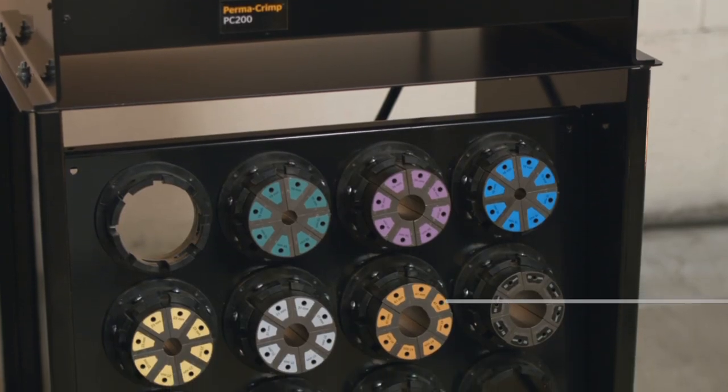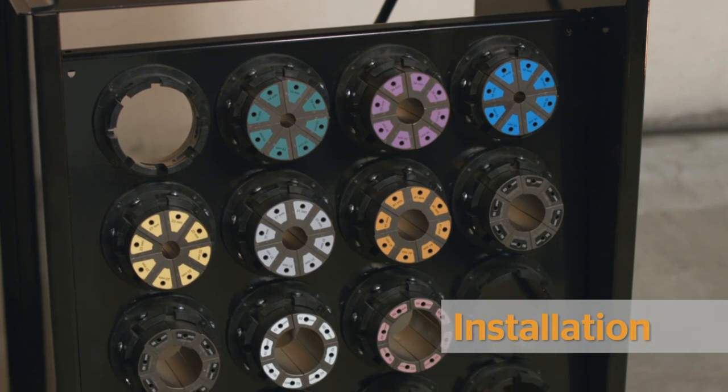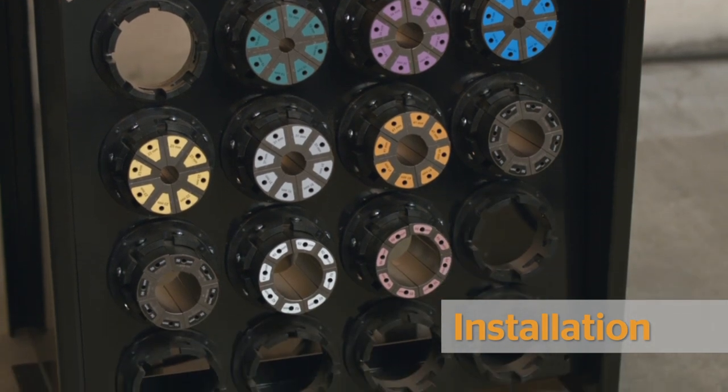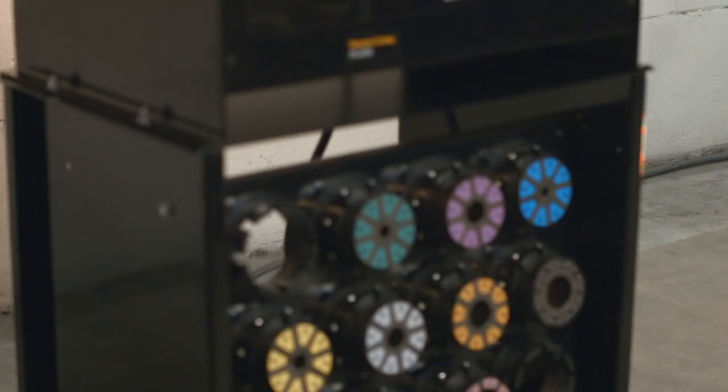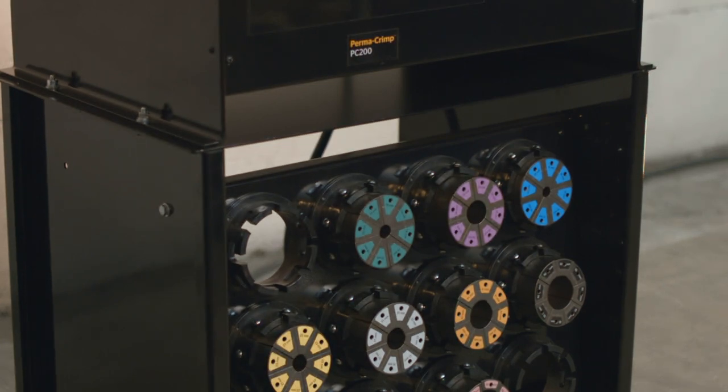The Crimper Kit comes with 12 die sets that range from 16mm to 78mm in diameter. They are color-coded and labeled for quick and easy identification.